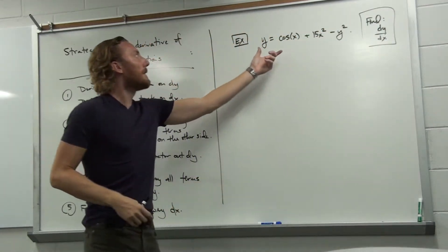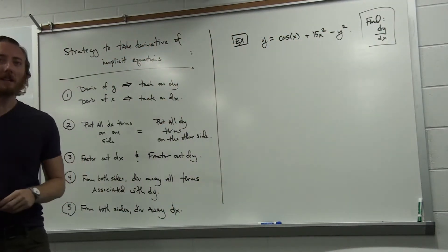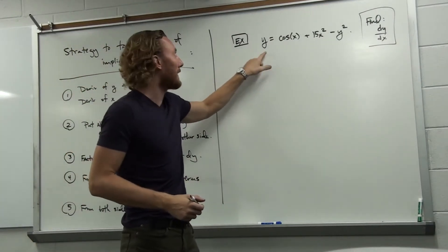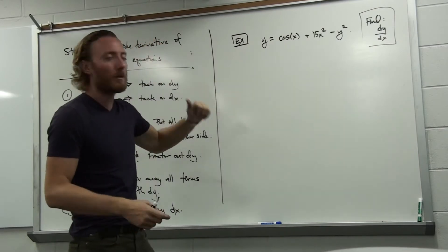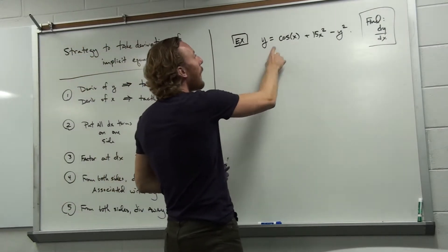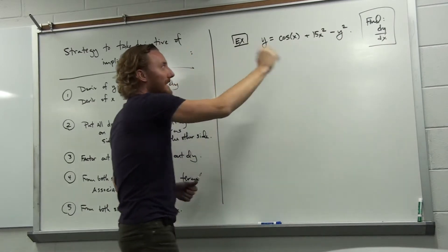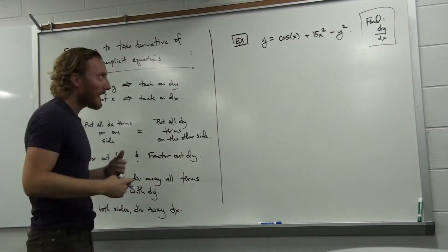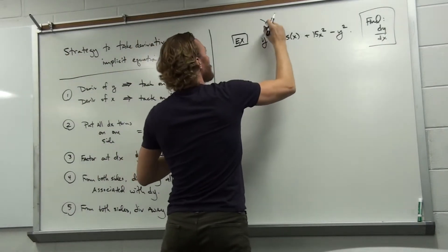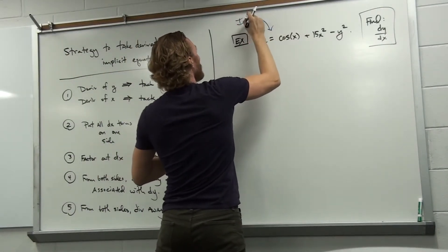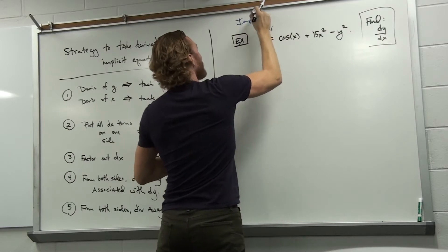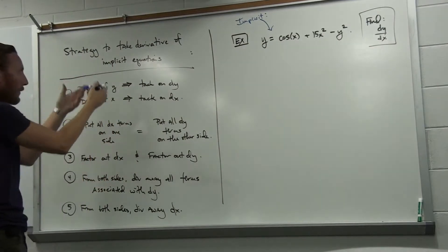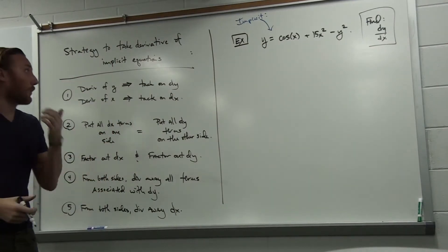So let's take a look at this example: y equals cosine x plus 15x squared minus y squared. On the surface, this almost looks explicit because it's y equals, but it's not explicit because in order to be explicit, you would have to have y equals where everything on the right did not depend on y. And here, we've got y on both sides. So this is an implicit expression, and since it is implicit, we're going to need to follow our tactic to take the derivative.